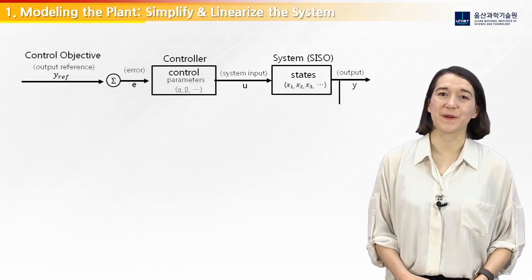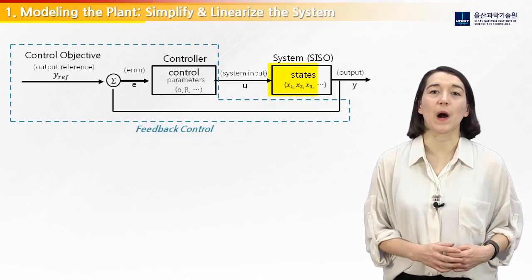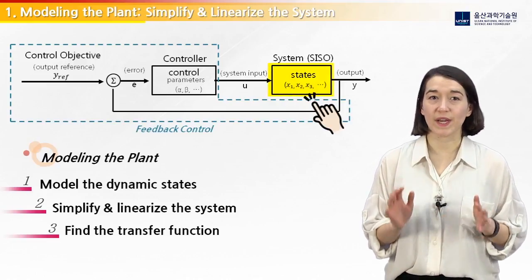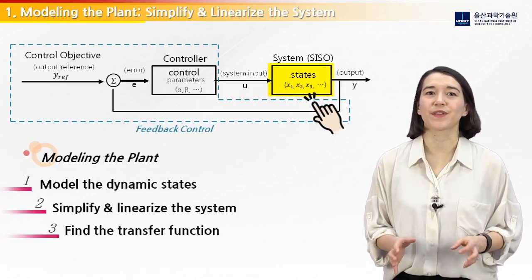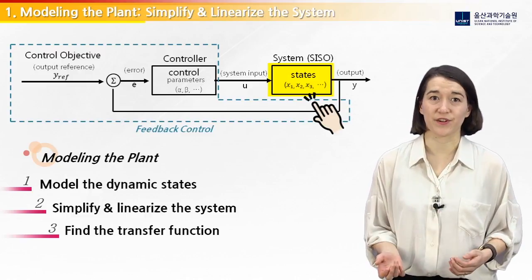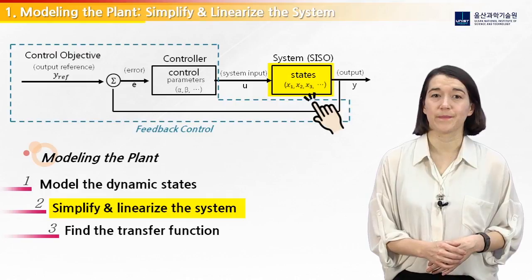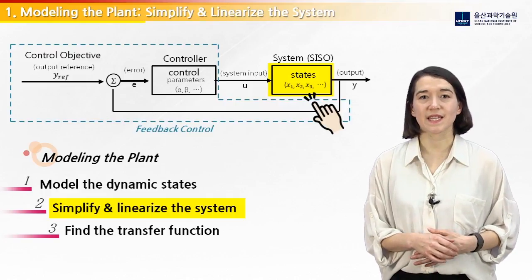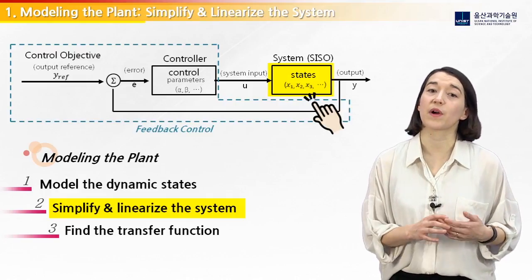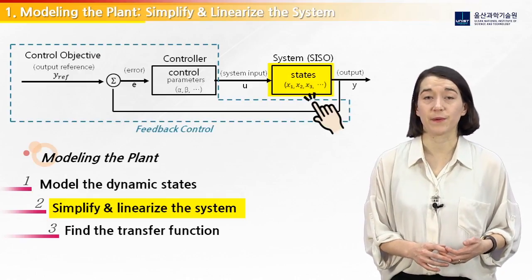Our goal is to model our buck converter plant as a single input, single output system. We assume that the equations for the dynamic states of the system have been determined, so now we move to the second step. In this step, we simplify and linearize our system around the equilibrium point in order to model it for feedback control.